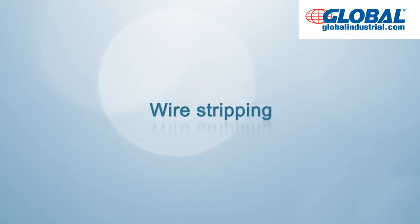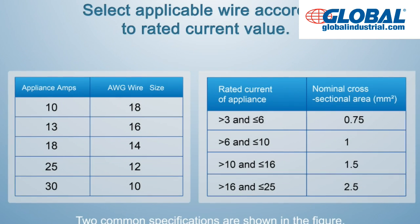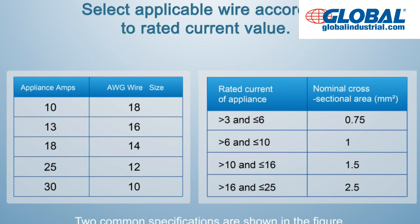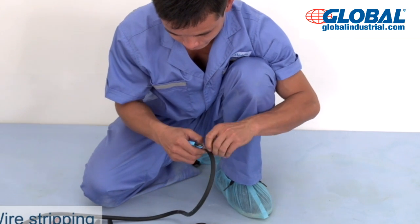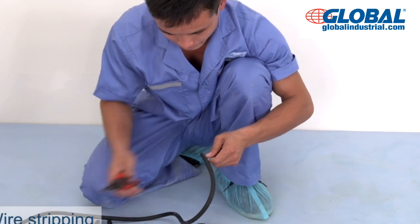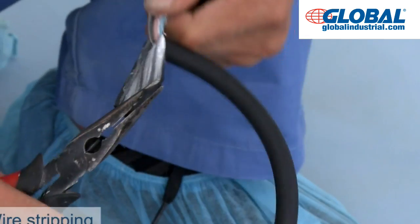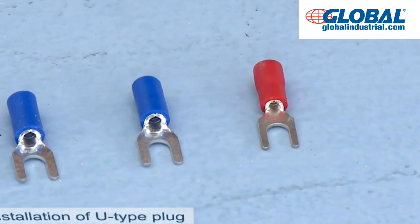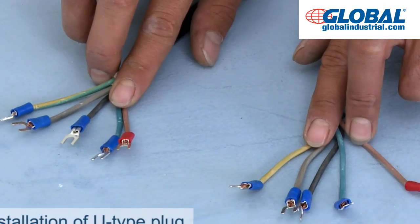Wire stripping: select applicable wire according to the rated current value. Two common specifications are shown in the figure. Strip the rubber skin at both ends of the connecting wire separately to uncover the connecting wire. Use a wire stripper to strip the wire core. Use a wire crimper to clamp the U-type plug, and pay attention to distinguish the L-wire from other wires.